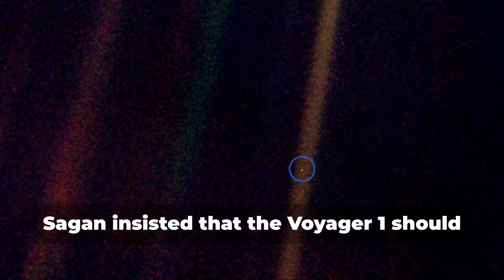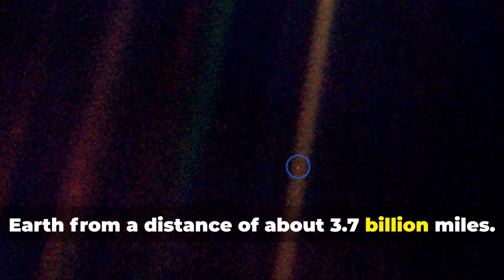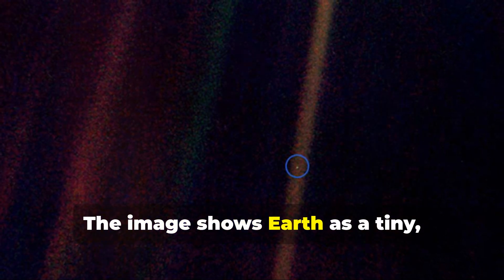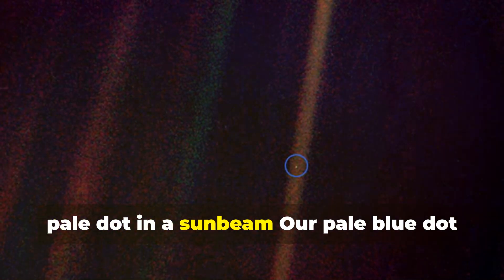Sagan insisted that the Voyager 1 spacecraft, as it exited the solar system, should look back, turning its camera to photograph Earth from a distance of about 3.7 billion miles. The image shows Earth as a tiny pale blue dot in a sunbeam.